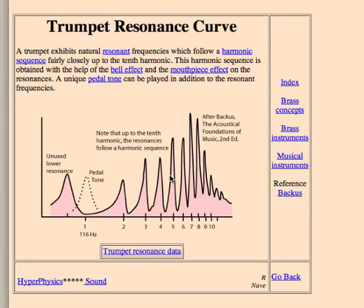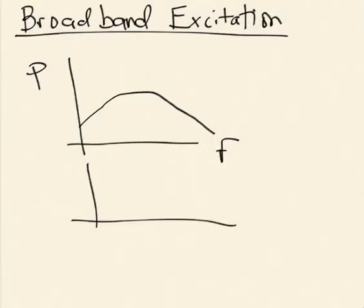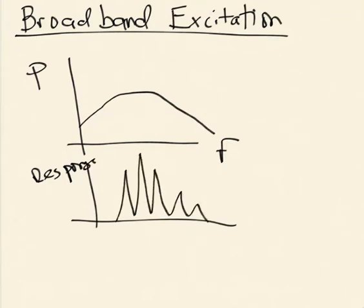When playing a trumpet — I used to play trombone — to change the note you're playing, you can change the way you vibrate your lips, and that changes the spectrum of sound waves you launch. The injected broadband power overlaps the resonant modes of the trumpet. The sound waves that match the resonant frequencies will drive resonances within the trumpet, allowing energy to build up. The waves bounce back and forth within the trumpet, and the phase of the reflection generates a standing wave.